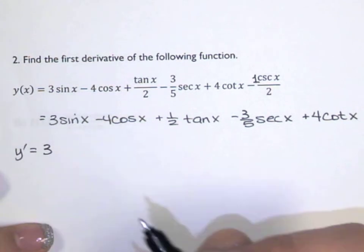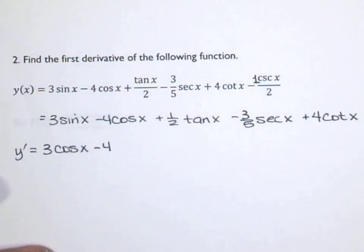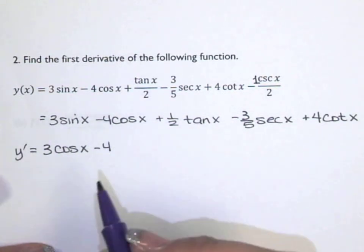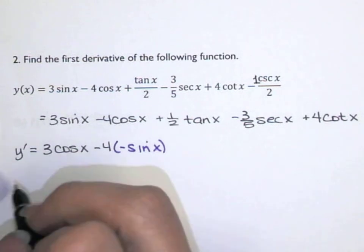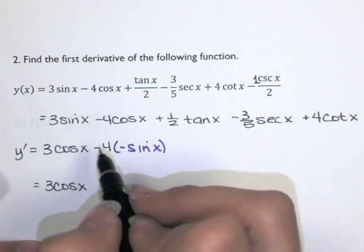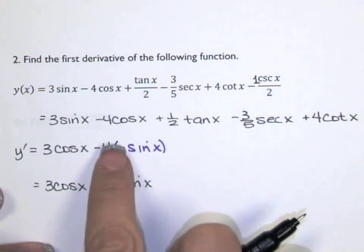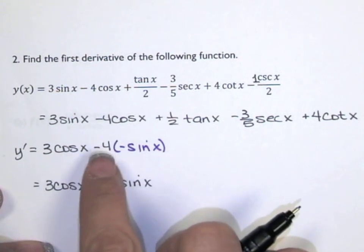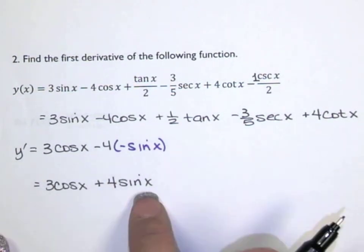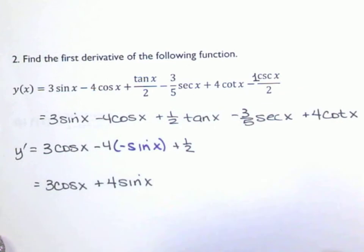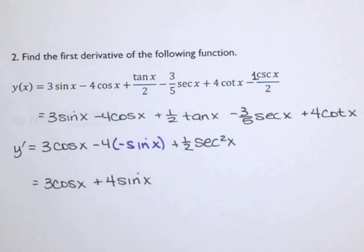Now we're ready to take the derivative. We bring the constants down and take the derivative of each trig function. The derivative of sine of x is cosine of x. Bring your constant down — the derivative of cosine of x is negative sine of x. You can put negative sine of x in parentheses and multiply, so negative 4 times negative sine of x is positive 4 sine of x. Those parentheses are essential — without them it looks like you're saying negative 4 minus sine of x, which is not what we intend.